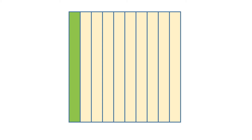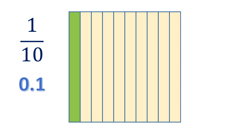And then we divide it into ten parts. Now, we have one shaded part, and this shaded part is one out of ten parts, or one-tenth. In decimal, it is written as 0.1, which is read as one-tenth.